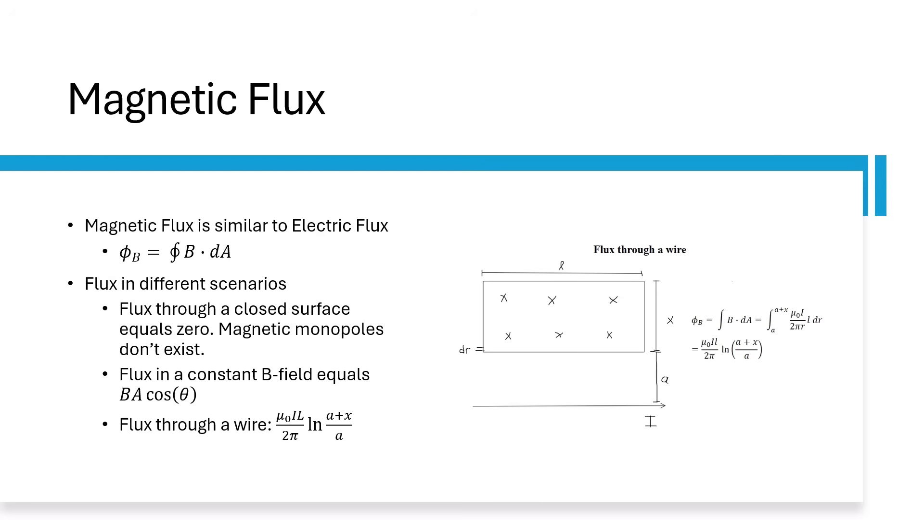In other words, whenever a line points from north to south, there is one cancelling it out that points from south to north. Flux in a constant B-field equals B A cos theta, and flux through a wire is shown to the right.